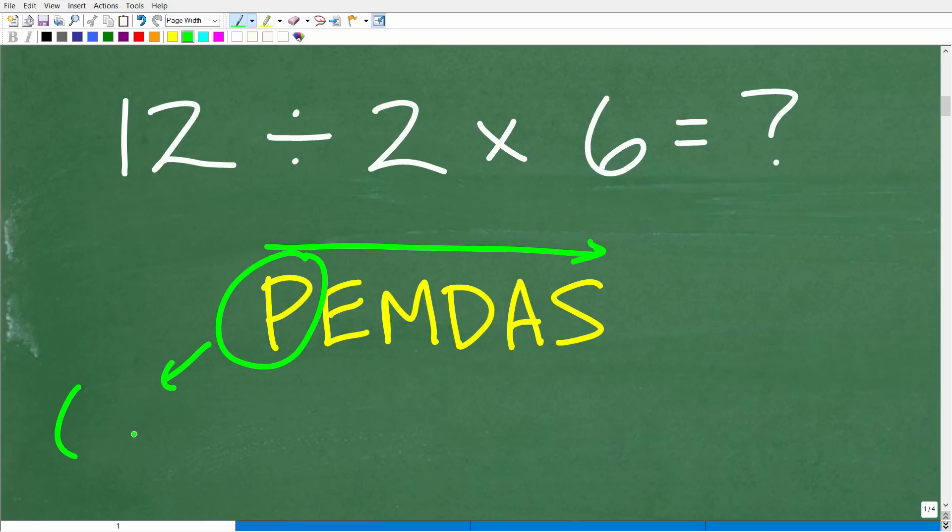So P stands for parentheses. So if we have parentheses in a math problem, let's suppose I have parentheses right here. You would start by doing all the math inside of those parentheses. Now of course this problem does not have parentheses so this step we pretty much kind of skip, but this is what this P stands for. It's parentheses, really technically it's grouping symbols so brackets like this and these type of brackets as well.